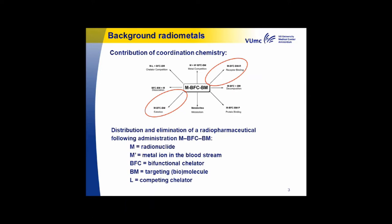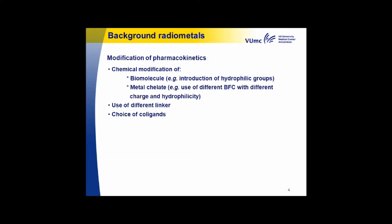These are important things to consider when you are going to use radio metals. If you want to change your pharmacokinetics, you can do a chemical modification of your biomolecule — you can incorporate, for example, PEG chains to enhance your biological half-life. You can use different chelators with different charge and hydrophilicity, as was pointed out in the previous lecture. You can use different linkers, and for example in the case of technetium, different co-ligands will determine the fate of your complex.